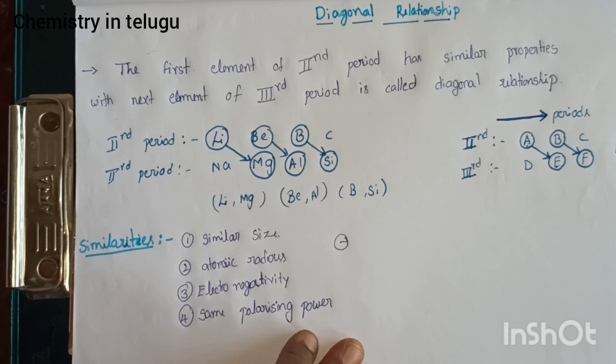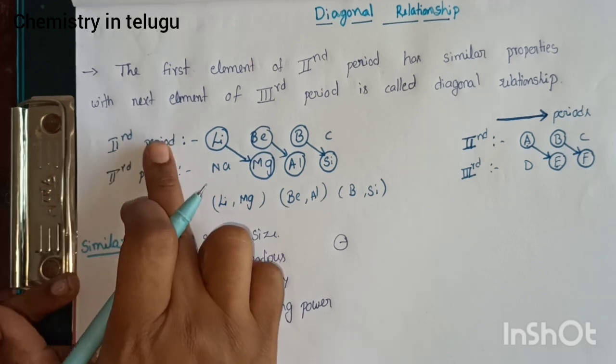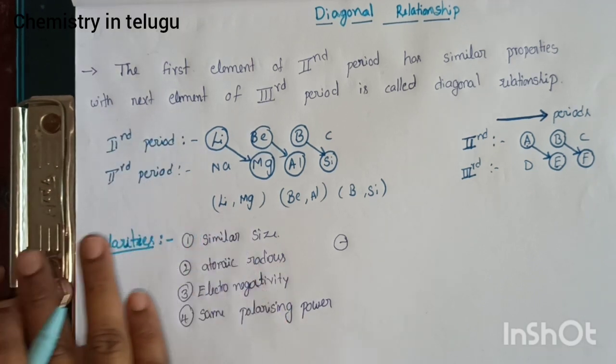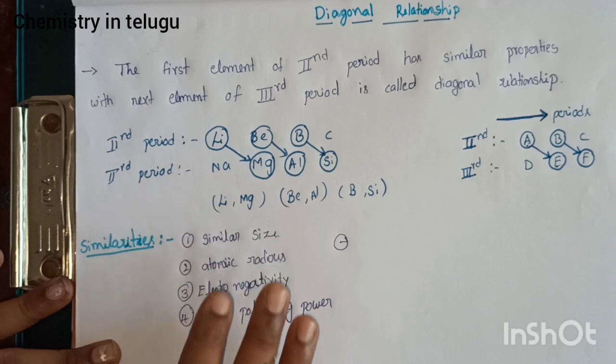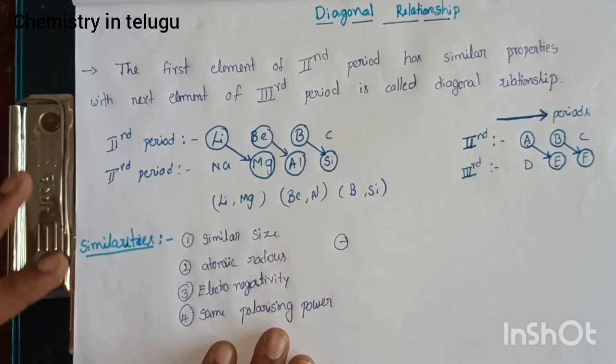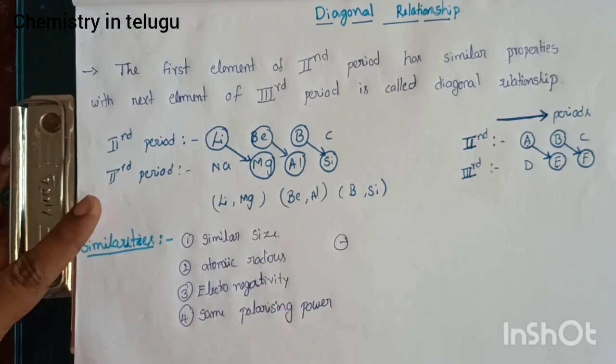If we observe this diagonal relationship within the second and third periods, we see consistent patterns among these diagonally related elements.